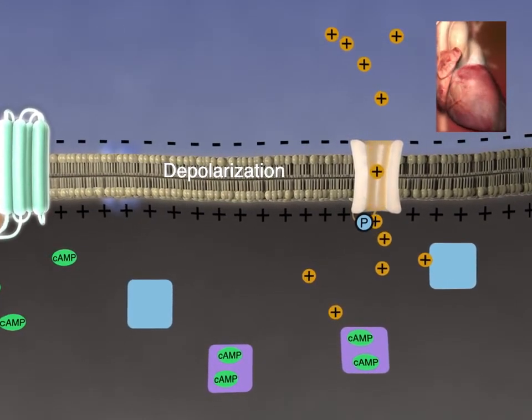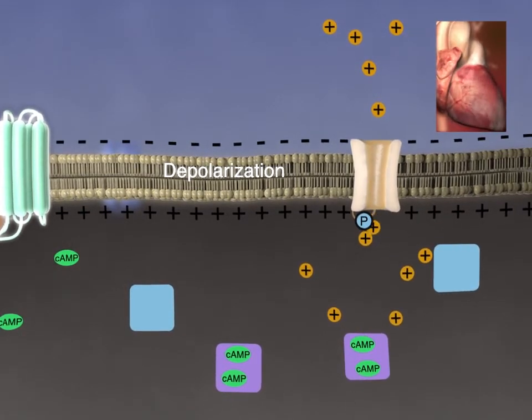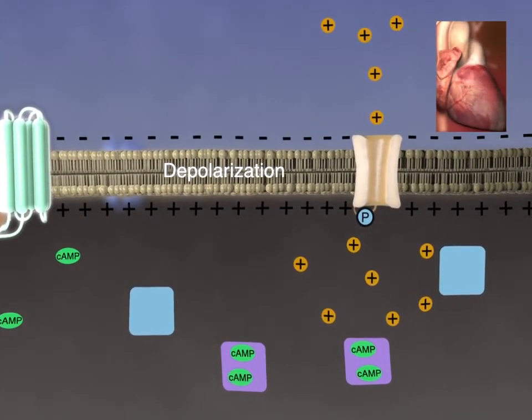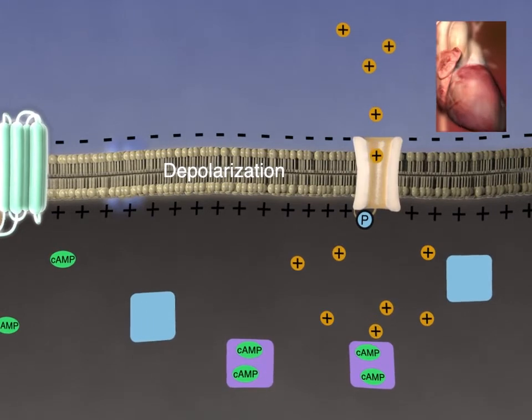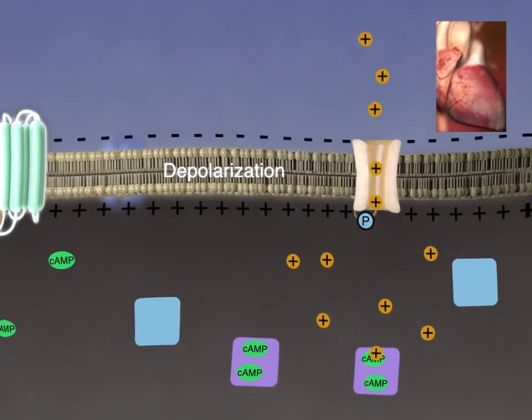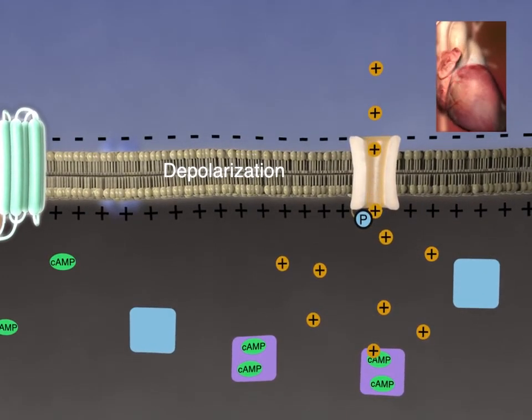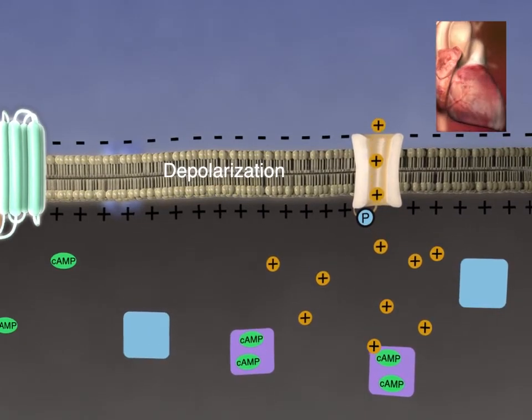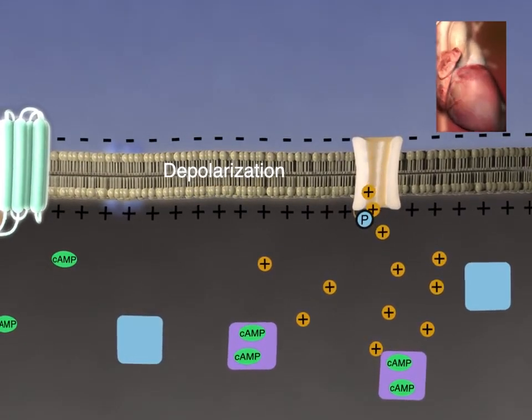In the heart pacemaker cells, L-type calcium channels are regulated by PKA, resulting in an increased rate of heart contraction when beta-1 adrenergic receptors are stimulated by the sympathetic release of adrenaline.